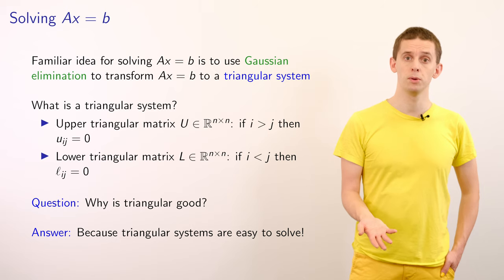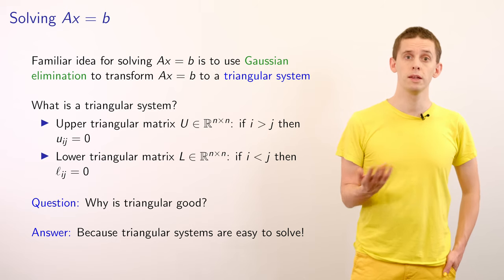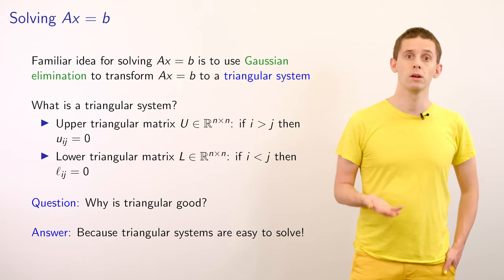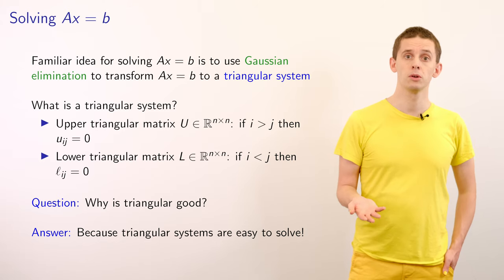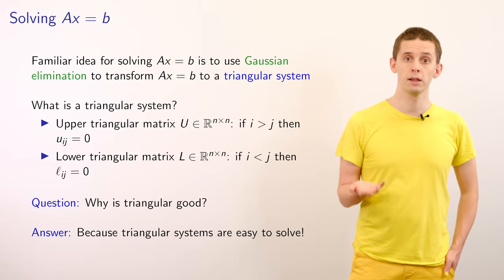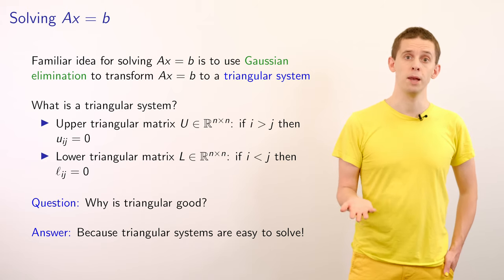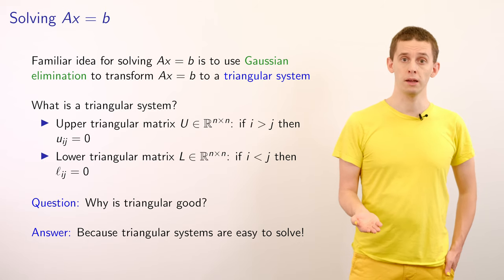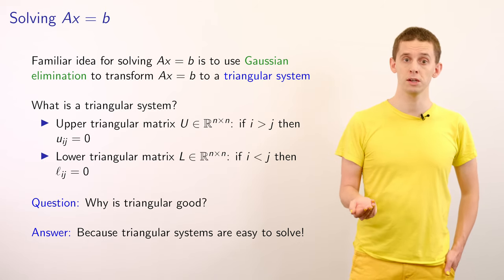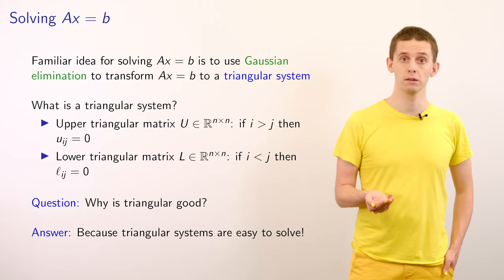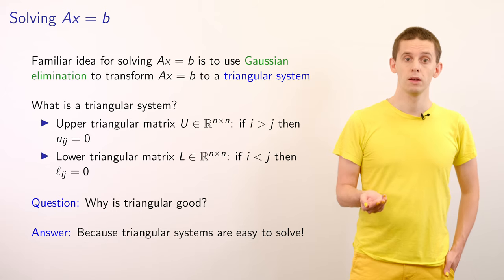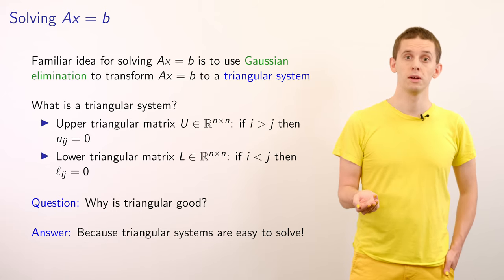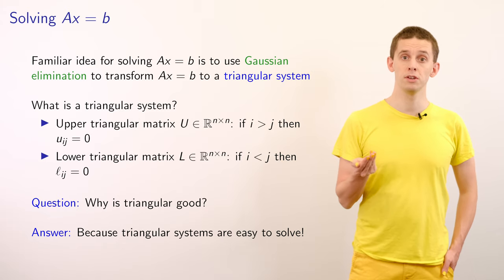A familiar idea for solving matrix problems is Gaussian elimination. Given a linear system Ax = B, the idea is to transform this into a triangular form. We'll use two different triangular matrix definitions for n-by-n matrices. A matrix U is upper triangular if its entries U_ij are zero for i greater than j, and a matrix L is lower triangular if its entries L_ij are zero for all i less than j. Triangular matrices are very easy to solve.